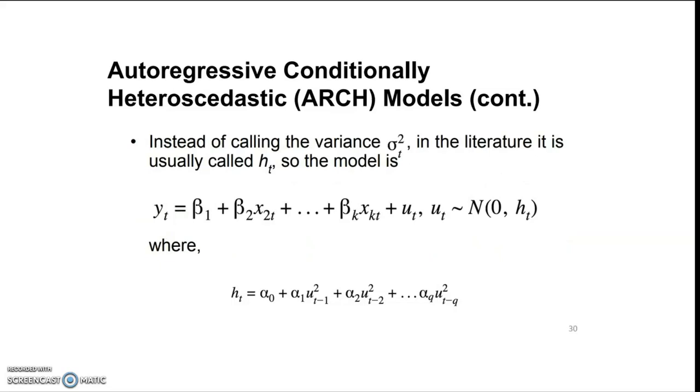Sometimes we see in the literature that instead of variance σ²t, we find that ht is used. So the model could be written as ht = α₀ + α₁ut₋₁² + α₂ut₋₂² + ... + αₑut₋ₑ².